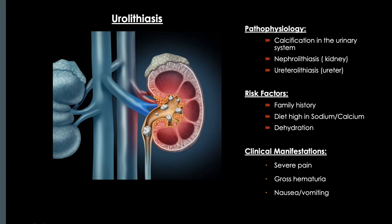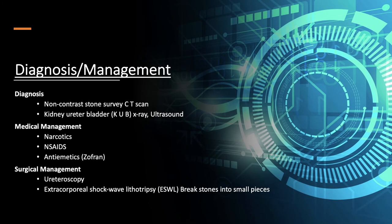When diagnosing urolithiasis, a CT scan is the most optimal diagnostic test for visualizing structures within the kidneys. A KUB — kidneys, ureters, and bladder X-ray — can also be done along with an ultrasound. All of these help identify whether stones are present.